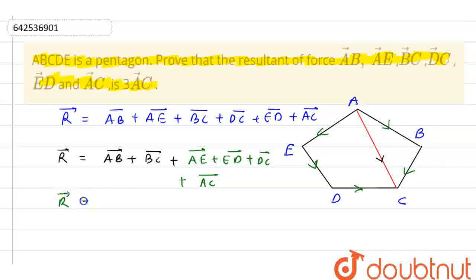So as we can see from the diagram, AB plus BC will give you vector AC. AE plus ED plus DC will give you vector AC, and we have vector AC here. So the resultant force is equals to 3 times vector AC which we need to prove. And this is my final answer here. Thank you.